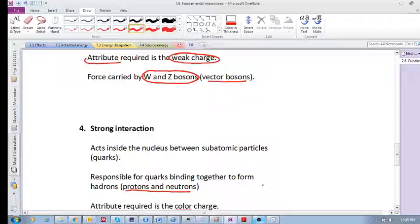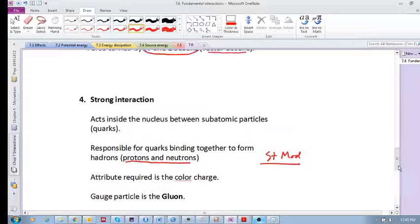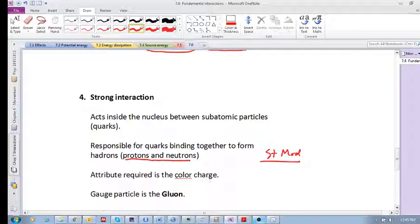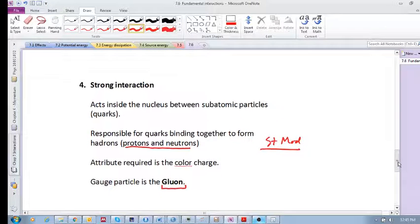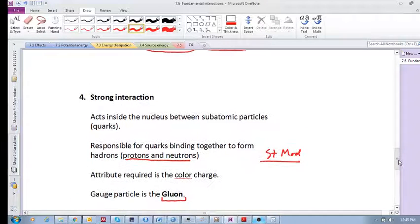As I said, if you do a brief study of the standard model, you can have a better understanding of what this is. The attribute required is called the color charge, and the gauge particle is the gluon. Sounds like something out of Star Trek.